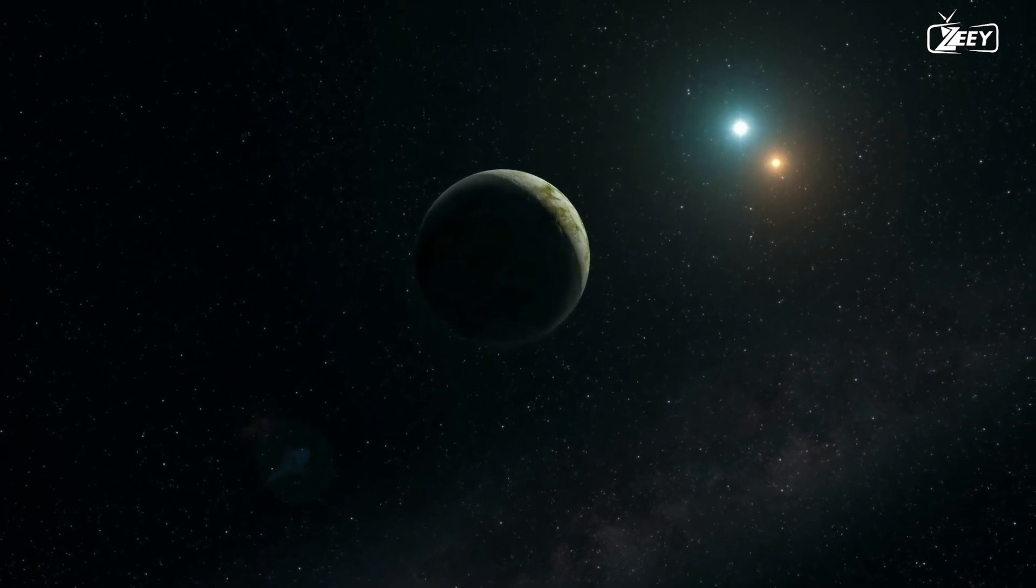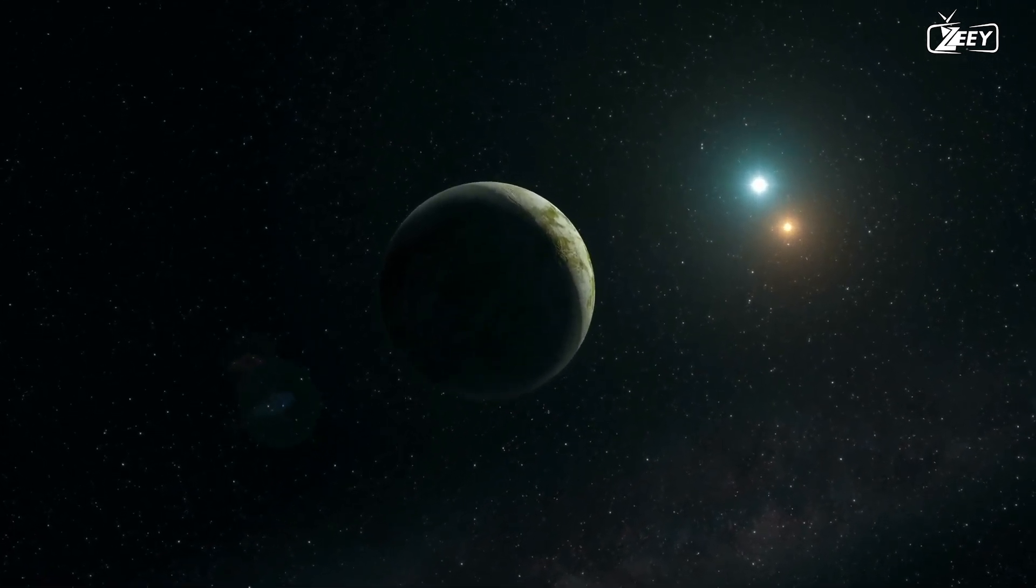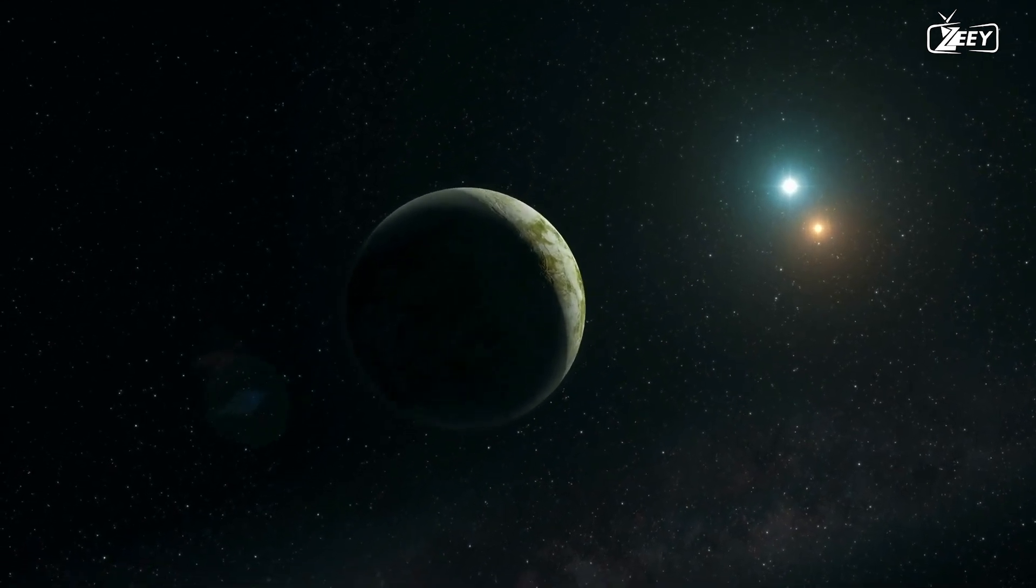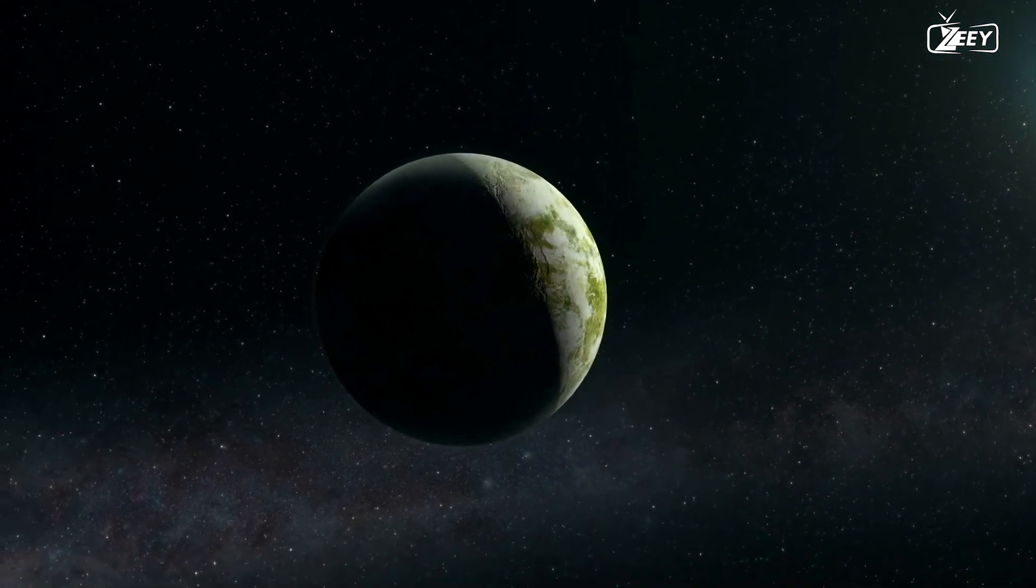Living on Kepler-22b would need a lot of swimming. It's also feasible that the planet's outer envelope has a volatile, element-rich composition, which would make it the smallest gaseous dwarf known to science.